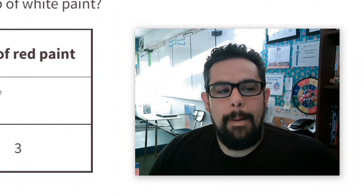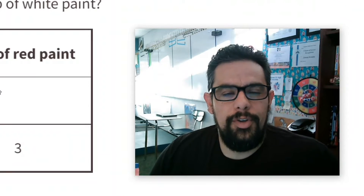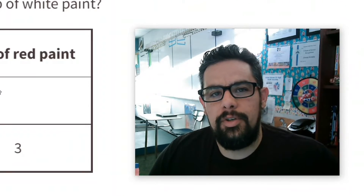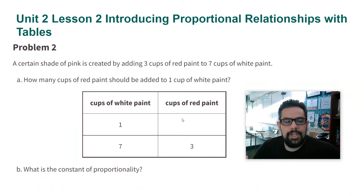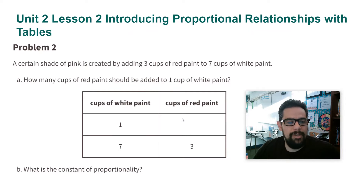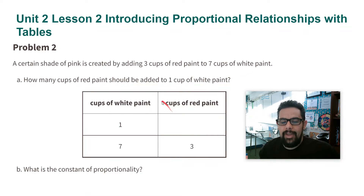Alright ladies and gentlemen, Mr. Urutia here, and we're going over unit two, lesson two, practice problem number two. A certain shade of pink is created by adding three cups of red paint to seven cups of white paint. How many cups of red paint should be added to one cup of white paint?